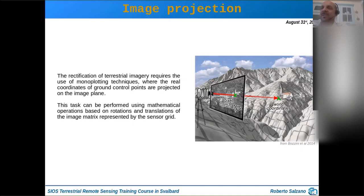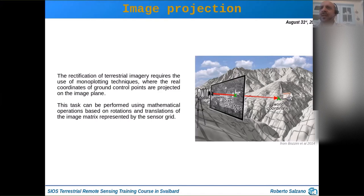There are some tools. I mentioned Pic2Map, which is a monoplotting plugin for QGIS. It works with OpenGL libraries, so you could have problems not with QGIS installation but with the installation of these libraries on your computer — it is very painful. There are also web-based options, but of course web-based tools are limited in terms of functionalities and the amount of images you can process.